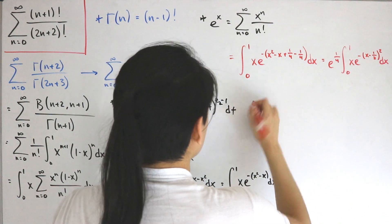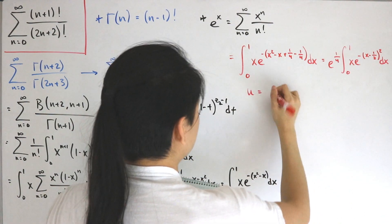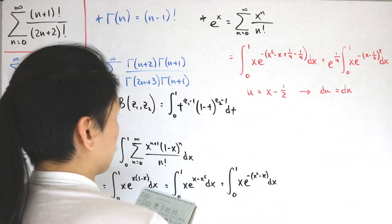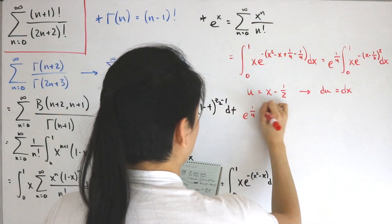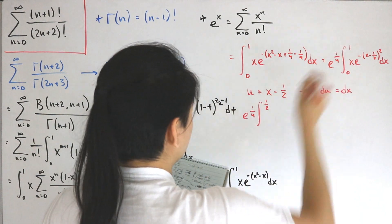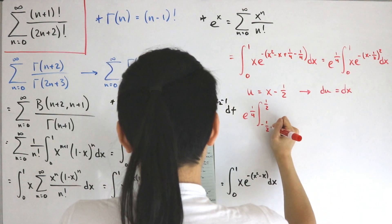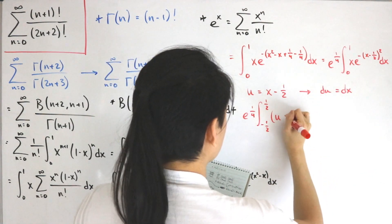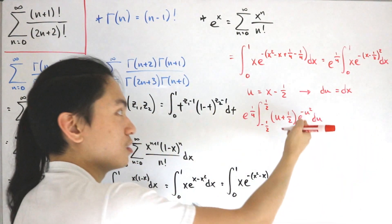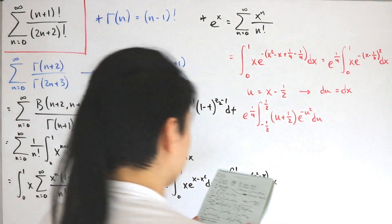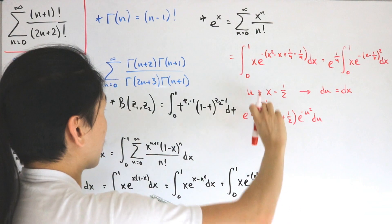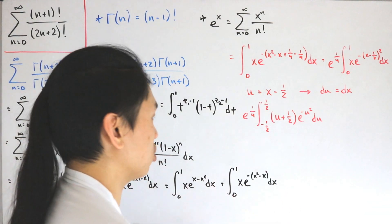Now we perform the substitution u = x - 1/2, so du = dx. Changing bounds: x=1 gives u=1/2, x=0 gives u=-1/2. The integral becomes e^(1/4) times the integral from -1/2 to 1/2 of (u + 1/2)·e^(-u²) du — this looks like a Gaussian function. But be careful: this is not over the entire real line, so it doesn't simply equal √π.